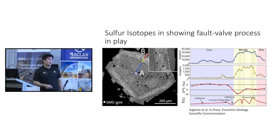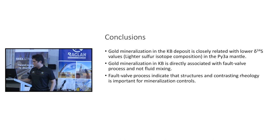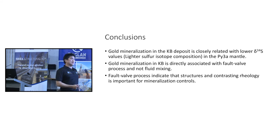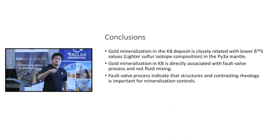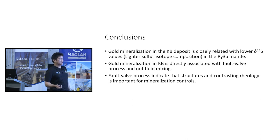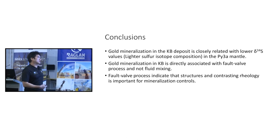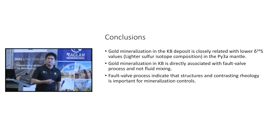Therefore, we interpret that gold precipitation in the Kanoona Bell deposit is most likely caused by the fault valve process. A sudden pressure drop in the system destabilizes sulfur in the fluids, causing rapid changes in oxygen fugacity and the sudden shift in delta-34S sulfur isotope values. The fault valve process and contrasting rheology of different rock units are therefore important controls on mineralization.